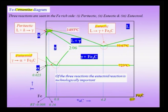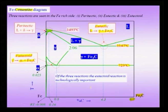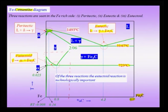The eutectoid reaction at 723°C is the truly important part of the phase diagram. If I want to delineate the important region, it extends in a box around the low-temperature iron-rich side, close to and above 723°C where the eutectoid reaction takes place. The three important reactions are: the peritectic at 1493°C where delta reacts with liquid to give gamma; the eutectic at 1147°C; and the eutectoid at 723°C.